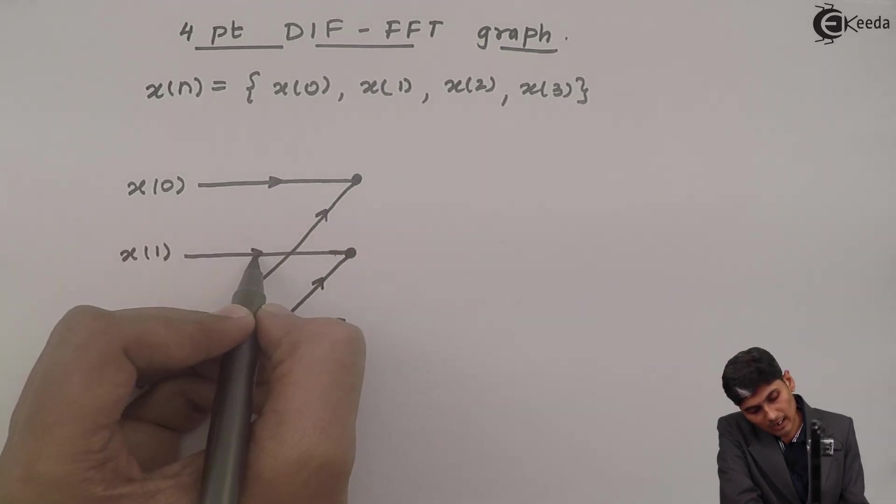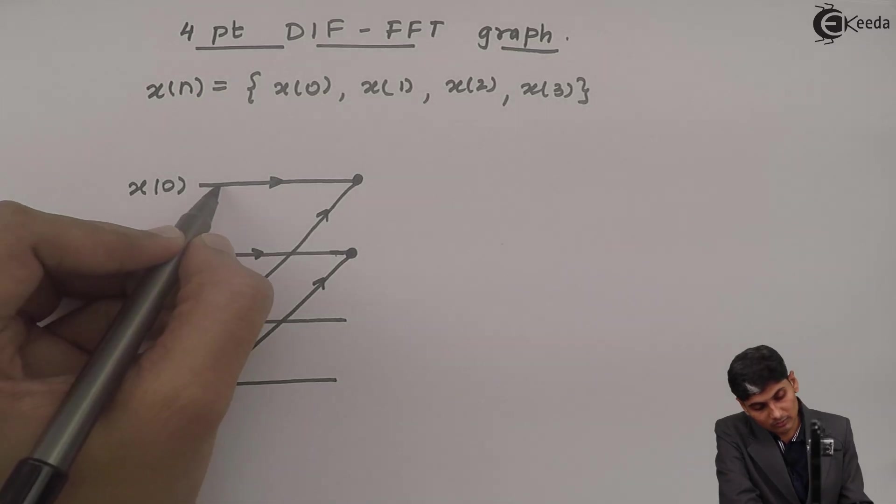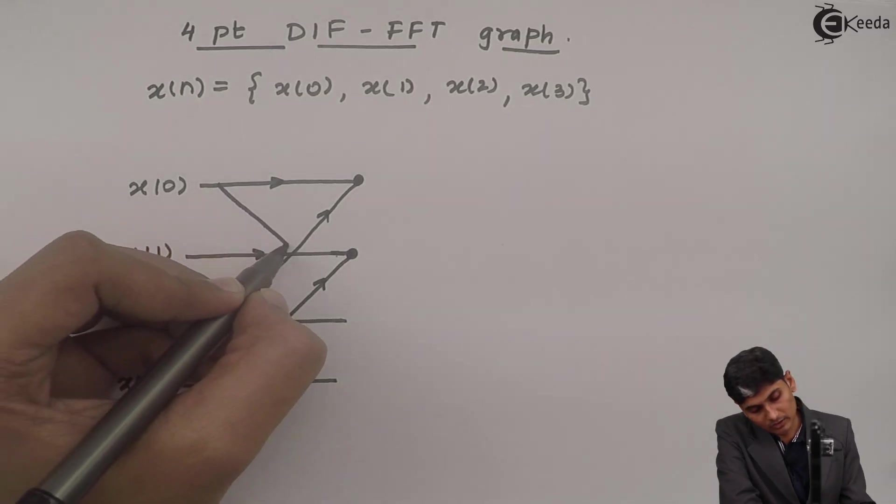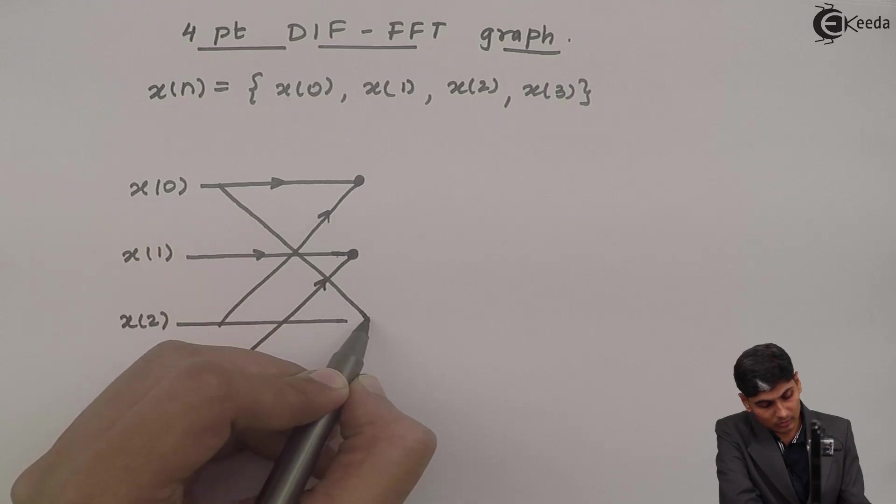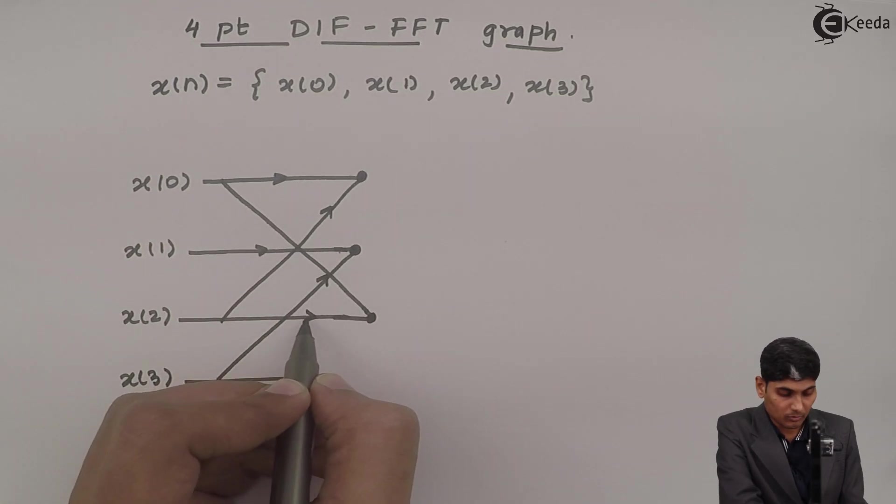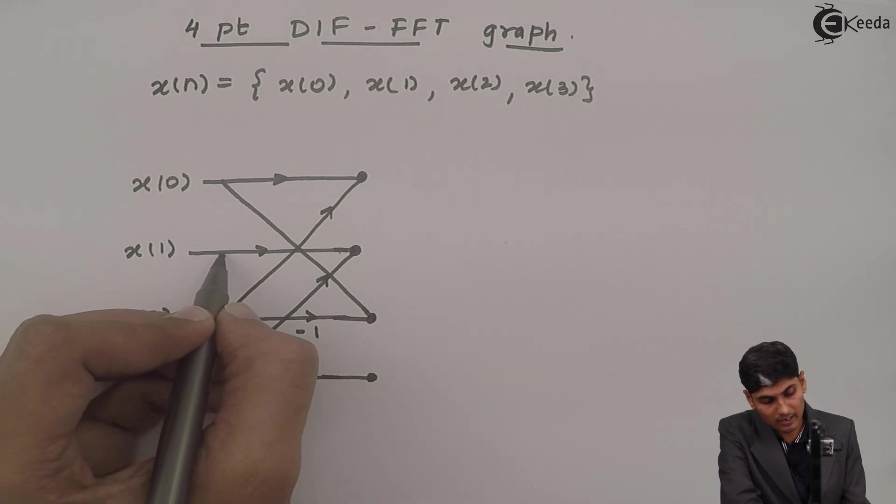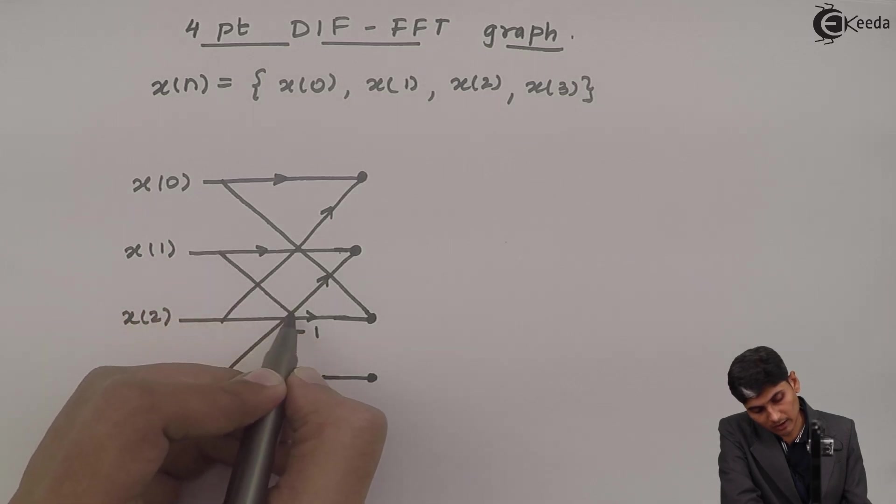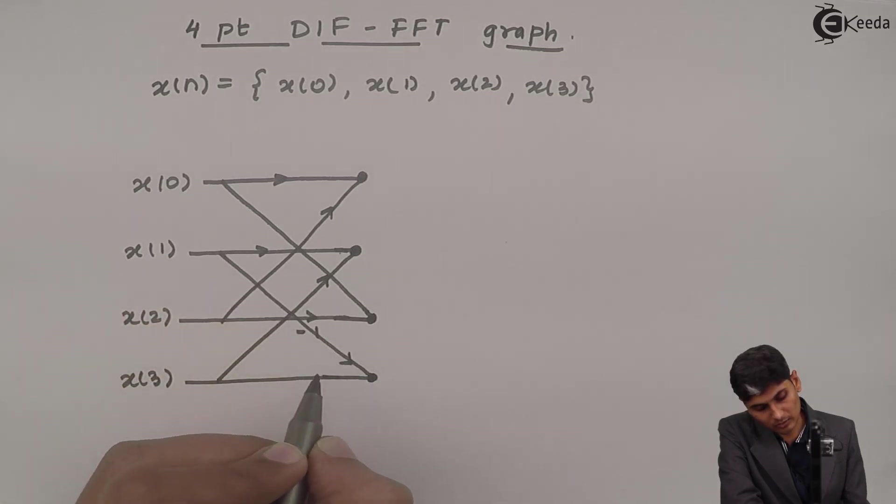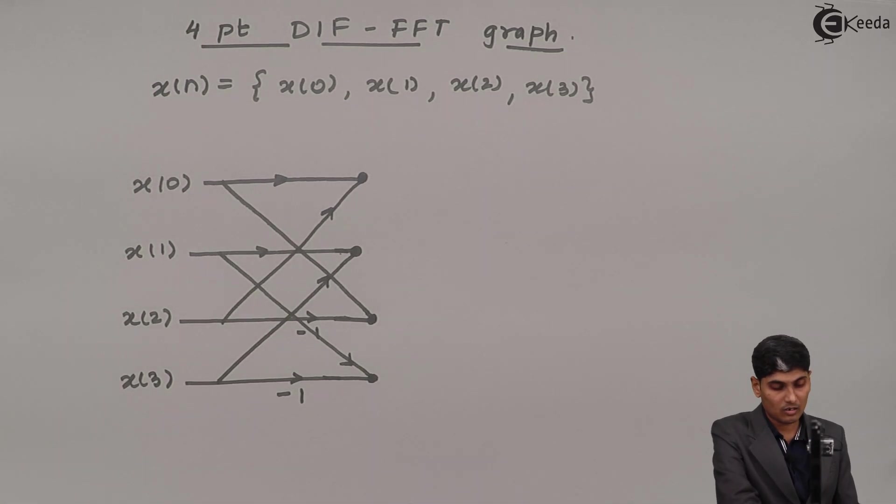And whenever I am going to come down, I am going to subtract the samples. So at this junction node, I am going to subtract the second value with the zeroth value. And at this point, I am going to subtract the final x of 3 with x of 1. So that is what the first stage will look like.